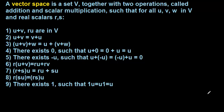In this video we want to talk about something called a subspace, and before we do that it's good to review what we mean by a vector space, because really a subspace is a special type of vector space. A vector space is a set V together with two operations called addition and scalar multiplication, such that for all vectors U, V, and W living in capital set V and real scalars R and S, we have several properties that hold.